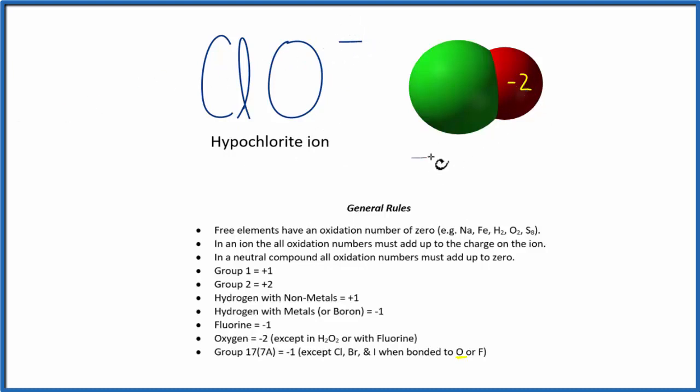We have a minus 2 here, plus some number, is going to equal the charge on the ion, which is negative 1. So minus 2 plus a positive 1, that would equal minus 1. That means the oxidation number here for the chlorine, that should be plus 1.